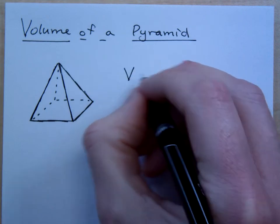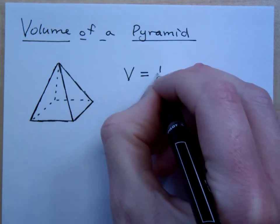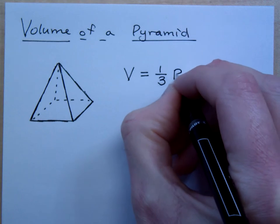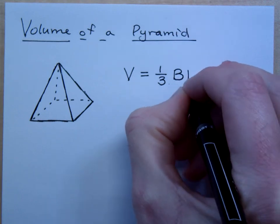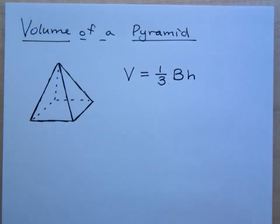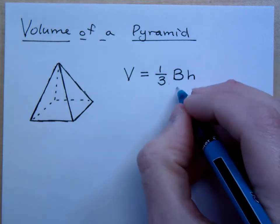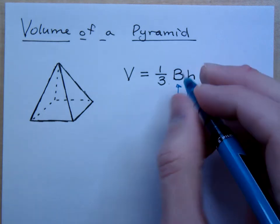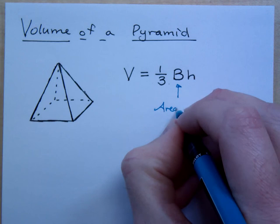But the volume for a pyramid is going to be one-third. Now, I'm writing a capital B here. And we need to understand what this B means. This B right here, when you see a capital B, means the area of the base.